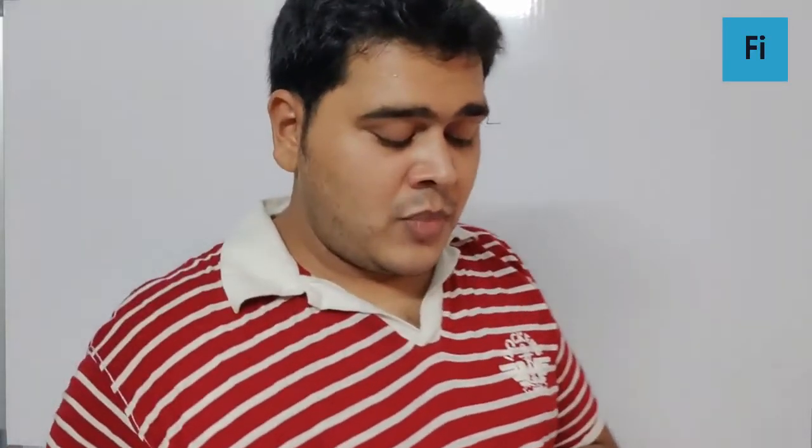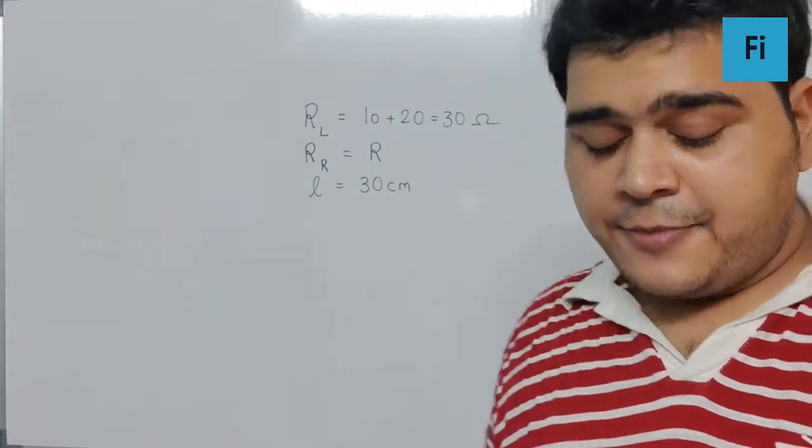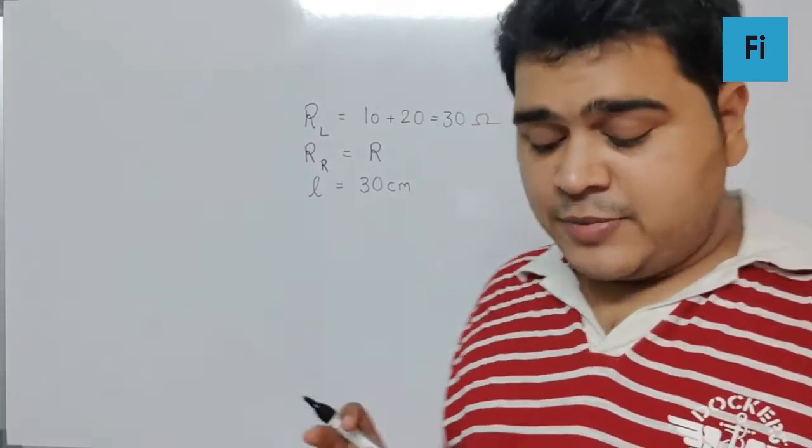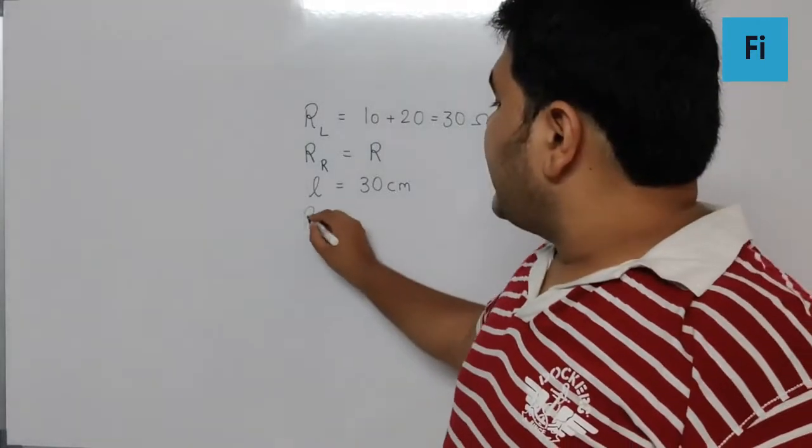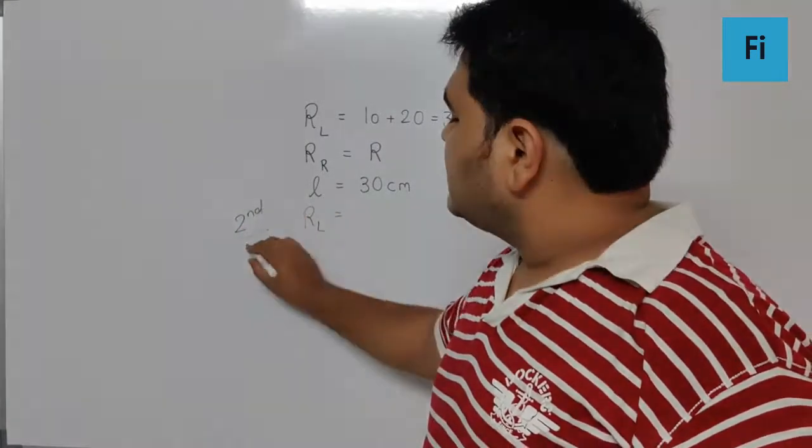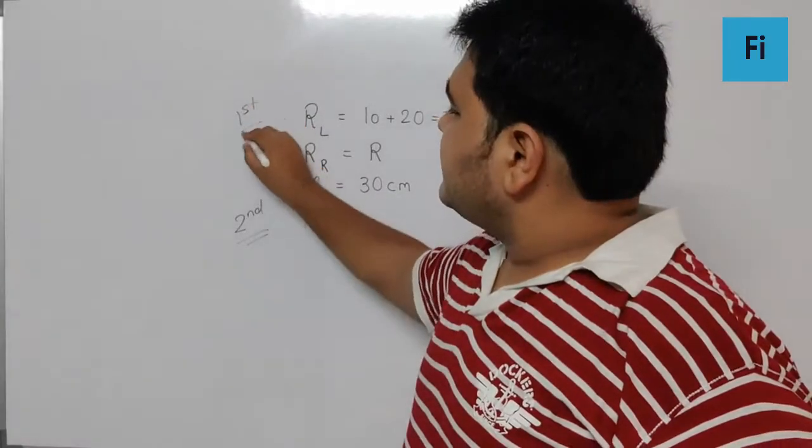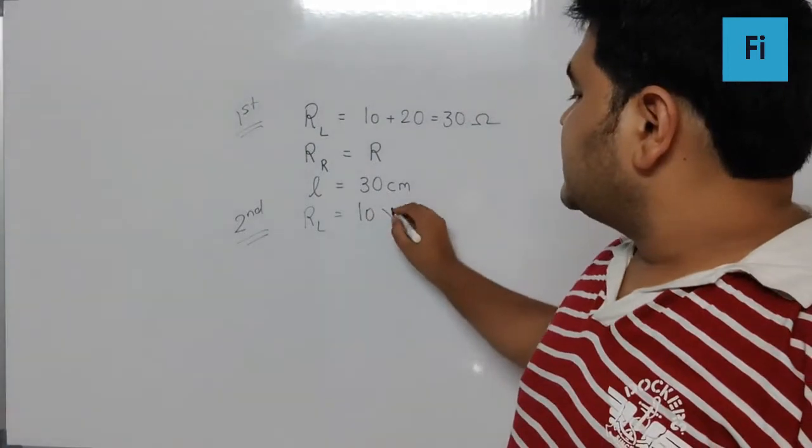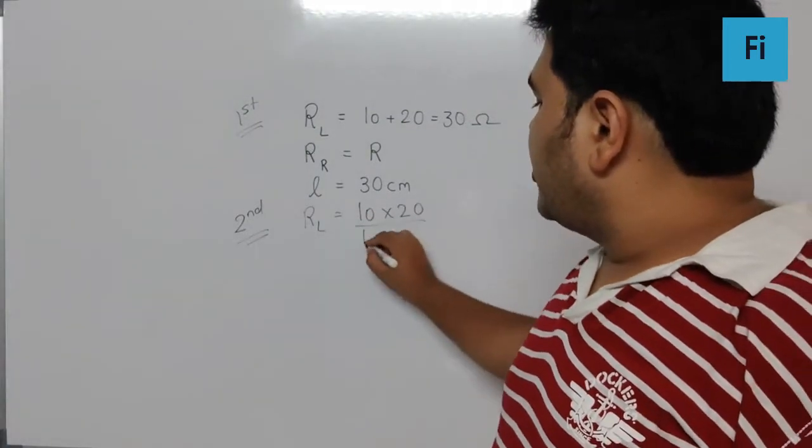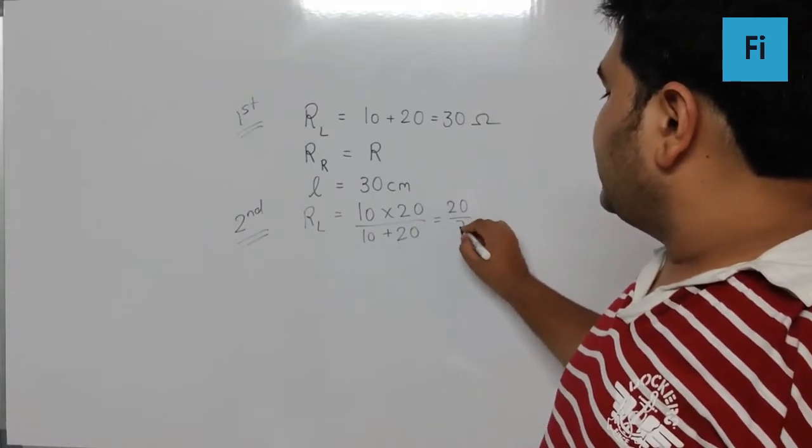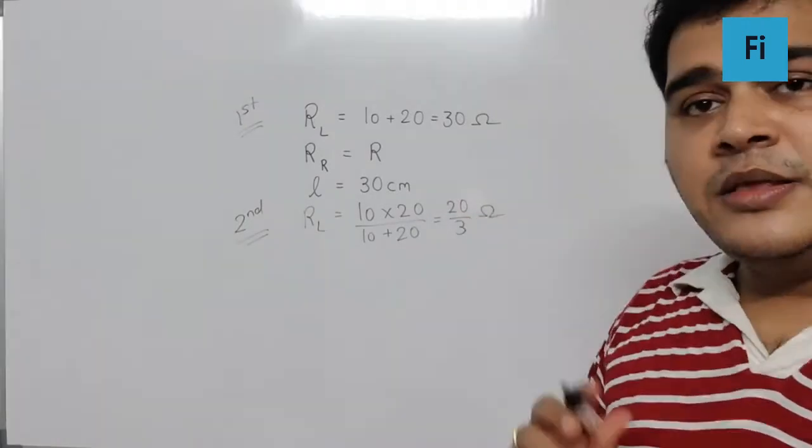Further in the question, they say the resistances in the left gap are then connected in parallel. That means for the second case, the left gap resistance RL is 10 times 20 upon 10 plus 20, which equals 20 by 3 ohm.